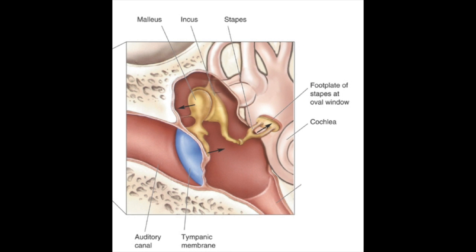Inside the middle ear, there are three bones called the malleus, incus, and stapes, also known as the hammer, anvil, and stirrup. These are collectively referred to as the ossicles. The tympanic membrane is connected directly to the malleus, which is connected to the incus, which is connected to the stapes.